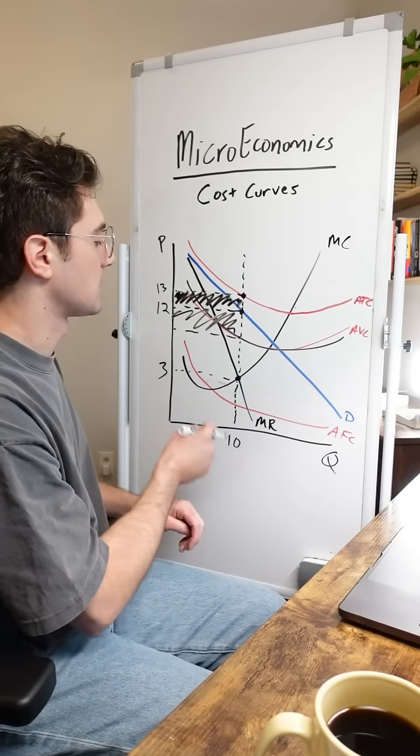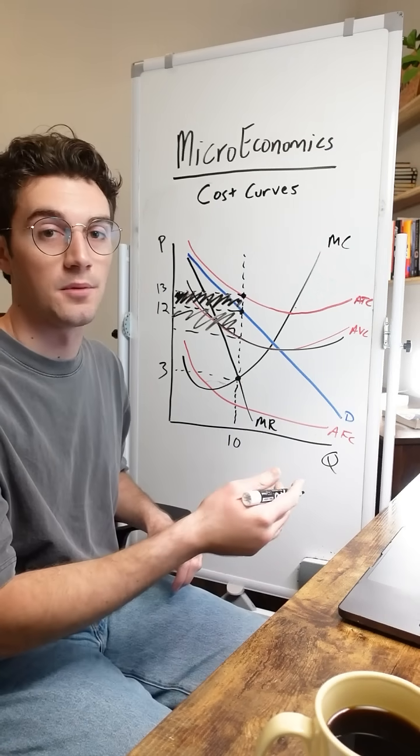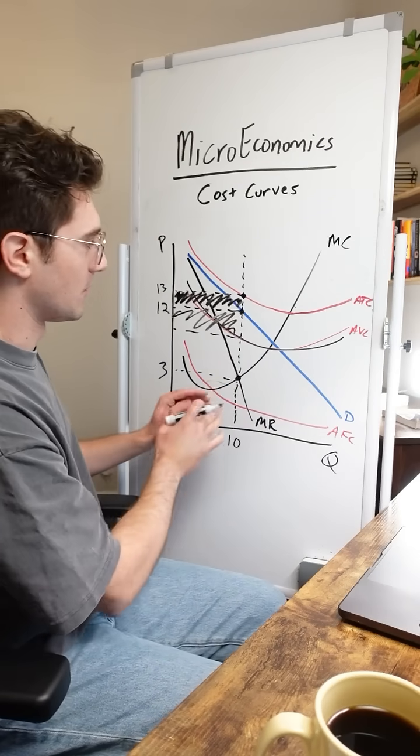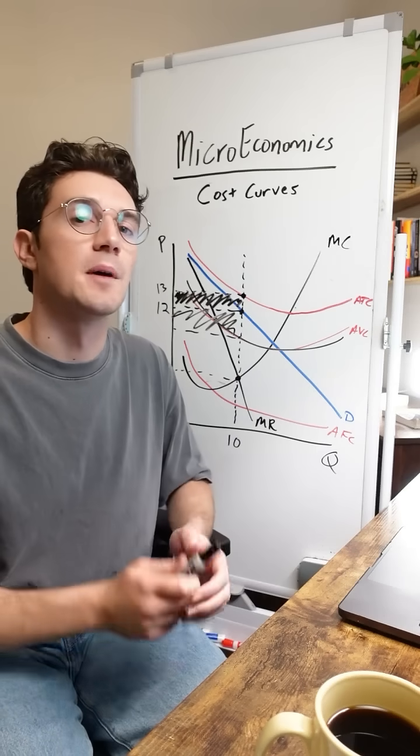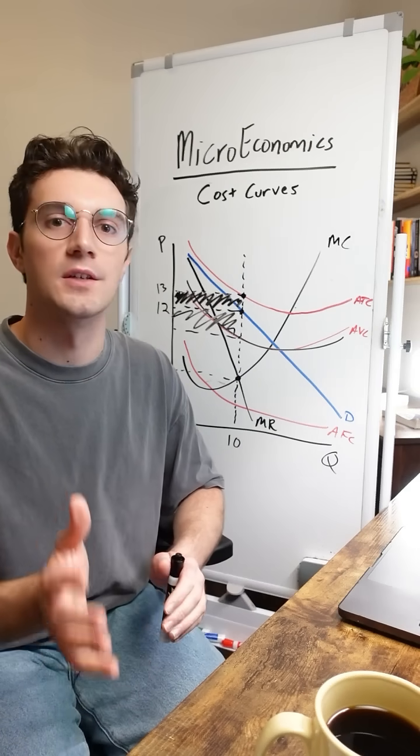Once you find that profit maximizing quantity at the MR equals MC point, lock in vertically and kind of ignore the whole entire curves. It becomes much easier to assess the profit or loss being generated.